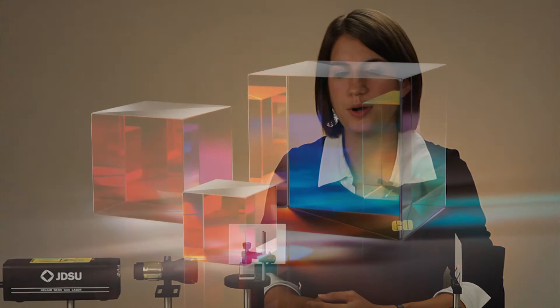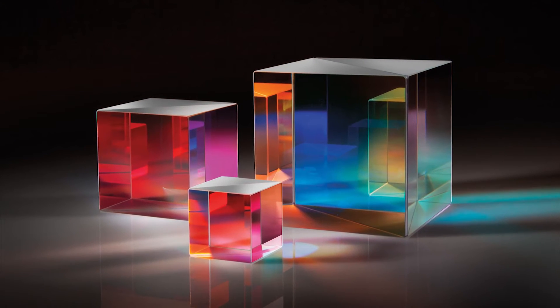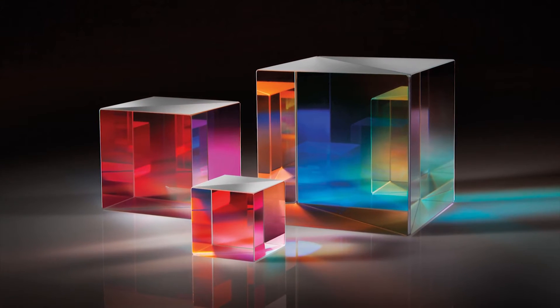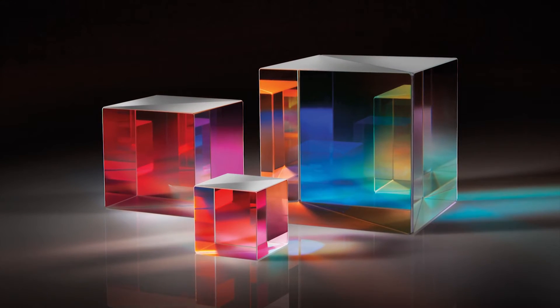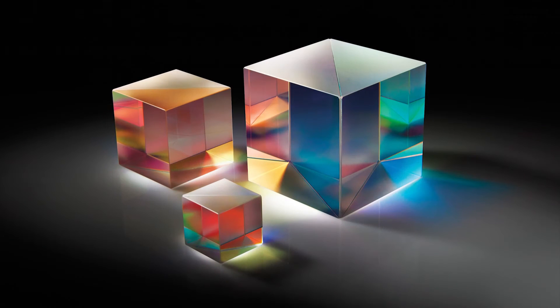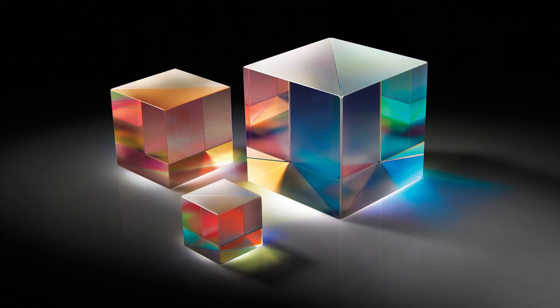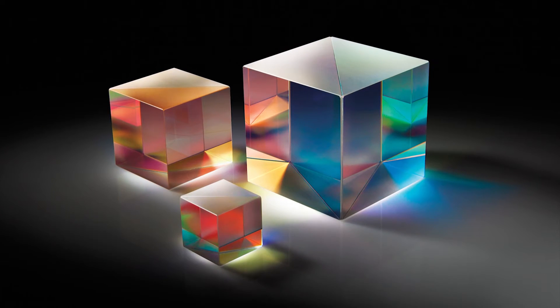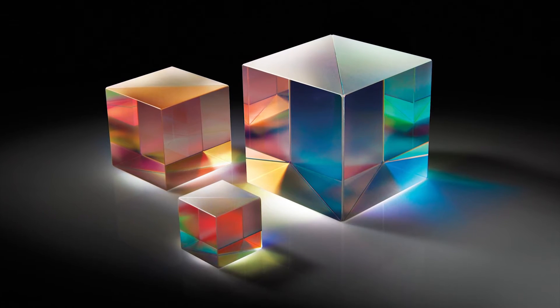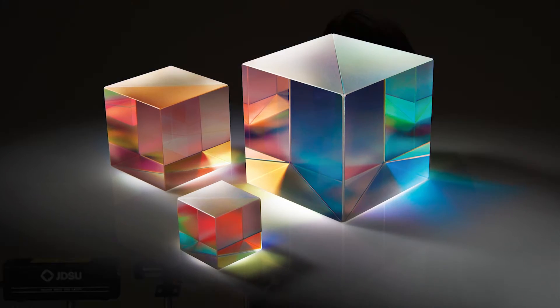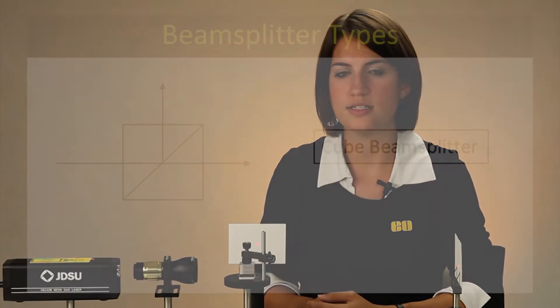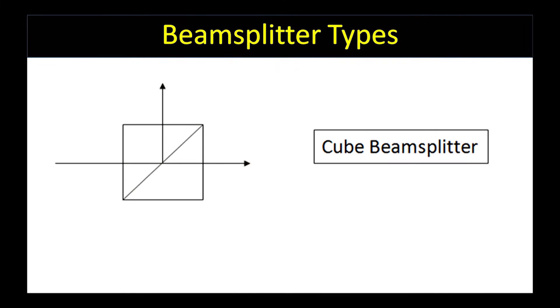Cube beam splitters are essentially composed of two right angle prisms cemented together at the hypotenuse with a partially reflective coating in between. Advantages of the cube include easy mounting, durability of the optical coating since it is between the surfaces, and no ghost images since reflections propagate back in the direction of the source.